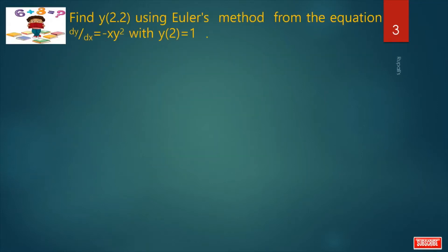In our previous video we already solved this problem. Please consult our previous video. Find y(2.2) using Euler's method from the equation dy/dx equals to minus xy squared with y(2) equals to 1.